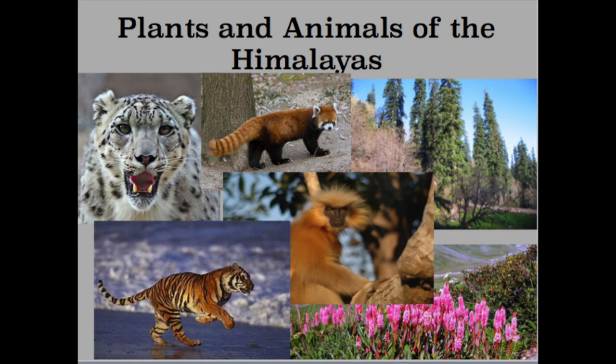Here are some pictures of Himalayan species. We have a snow leopard, a red panda, a Bengal tiger, and a monkey called a golden langur. Some types of trees that live here are fir trees and different types of conifer trees, and these flowers are called bistorta. I hope you learned a little bit more about tropical rainforests, temperate forests, and mountains.